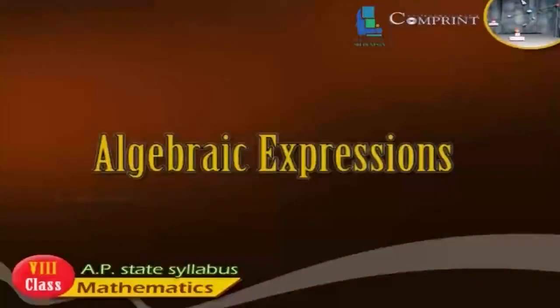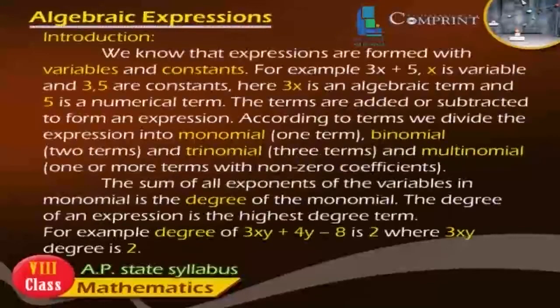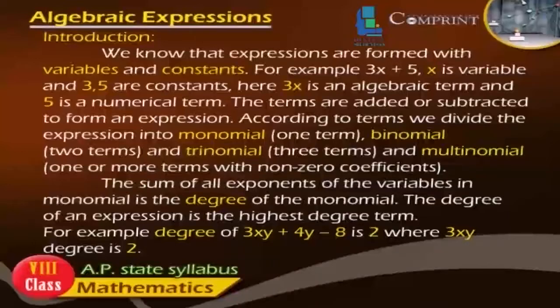Algebraic Expressions. Introduction: We know that expressions are formed with variables and constants. For example, 3x plus 5, where x is a variable and 3 and 5 are constants. Here, 3x is an algebraic term and 5 is a numerical term. The terms are added or subtracted to form an expression.